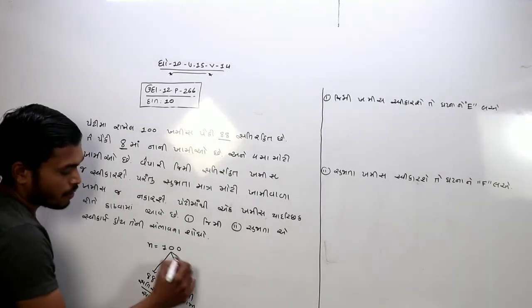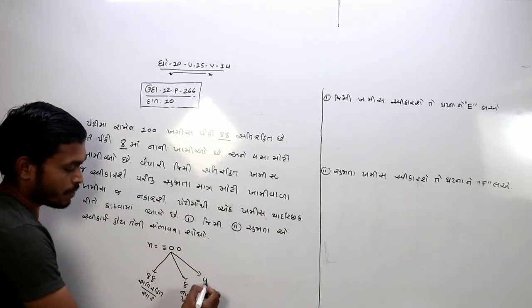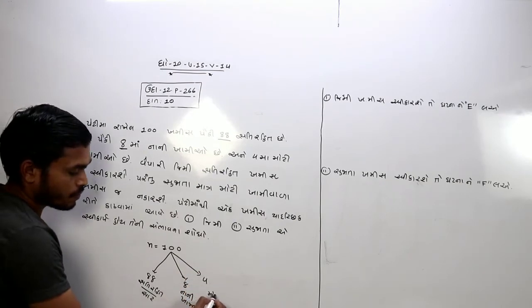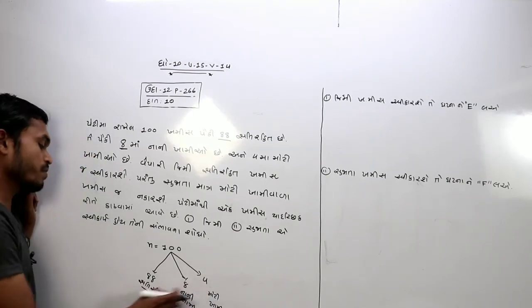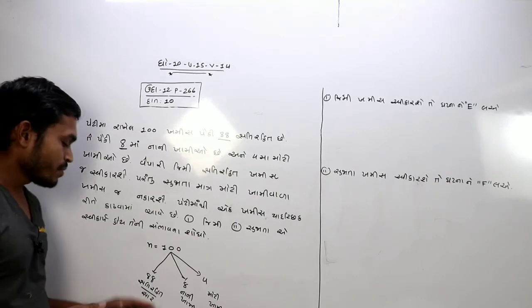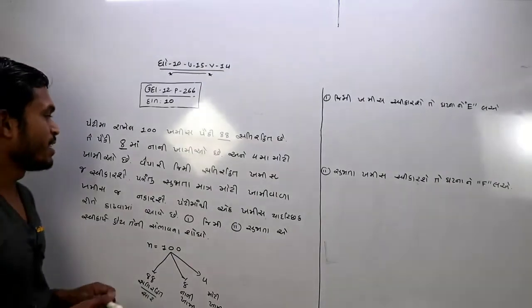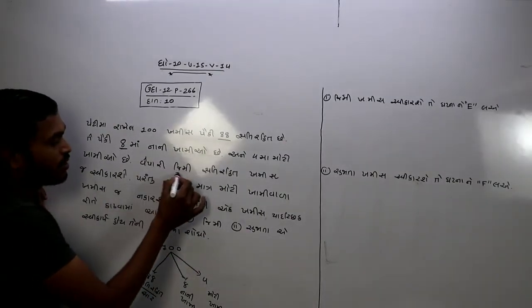એઠ્યાસી સતી રહીત એલેકે સારા જે તેમાં એક વેપારી છે, એક વેપારી છે એક તો જીમી ઈએ કાયાં.